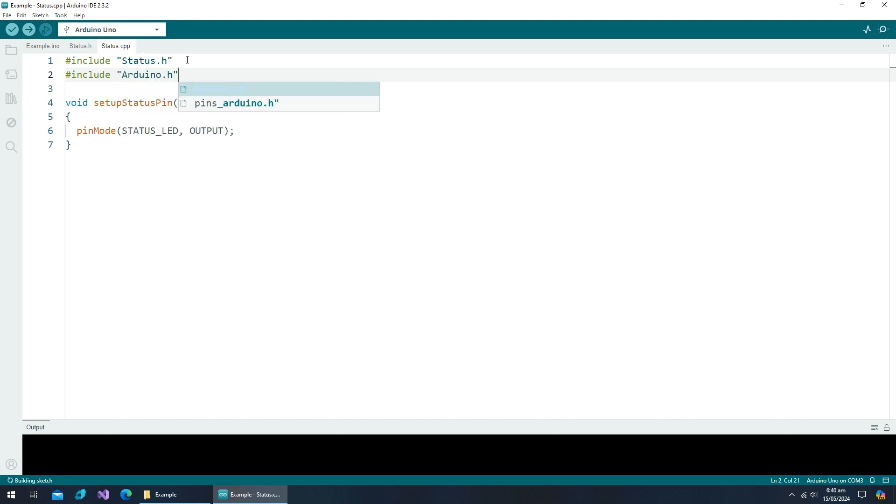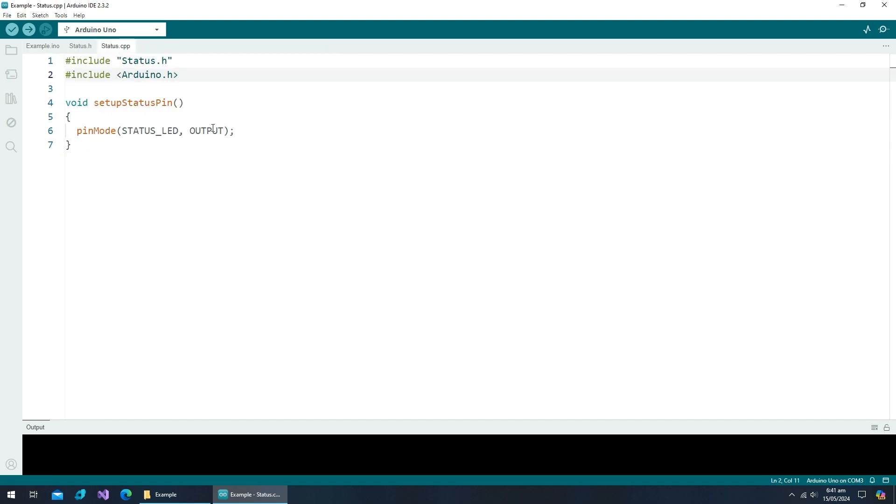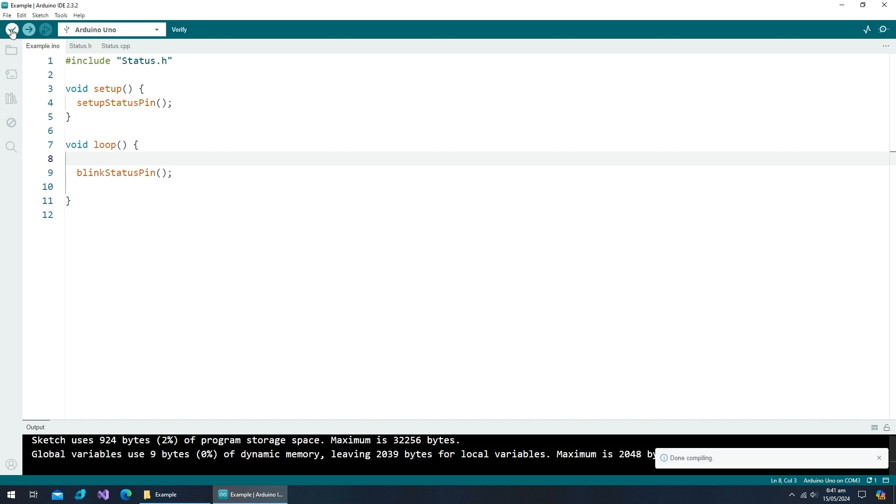You can use the double quotes here, but it is convention to use the other brackets for the SDK library. Now the same procedure can be used to transfer the status LED blinking part of our code. As the last step we need to include our header file in this sketch. That's it, it's complete. We can check by compiling the code. Everything is fine as we have split our code into multiple compilation units.